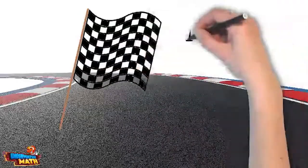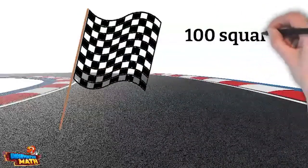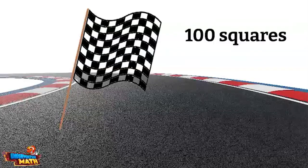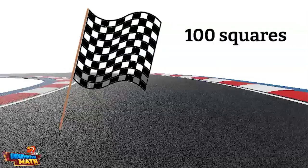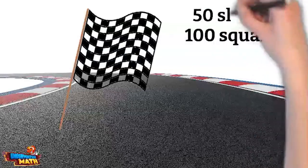There are 100 squares on it, so each square is one-hundredth of the flag. What is the value of the shaded part of the flag? Every other square on the flag is shaded—that means 50 of the squares are shaded.